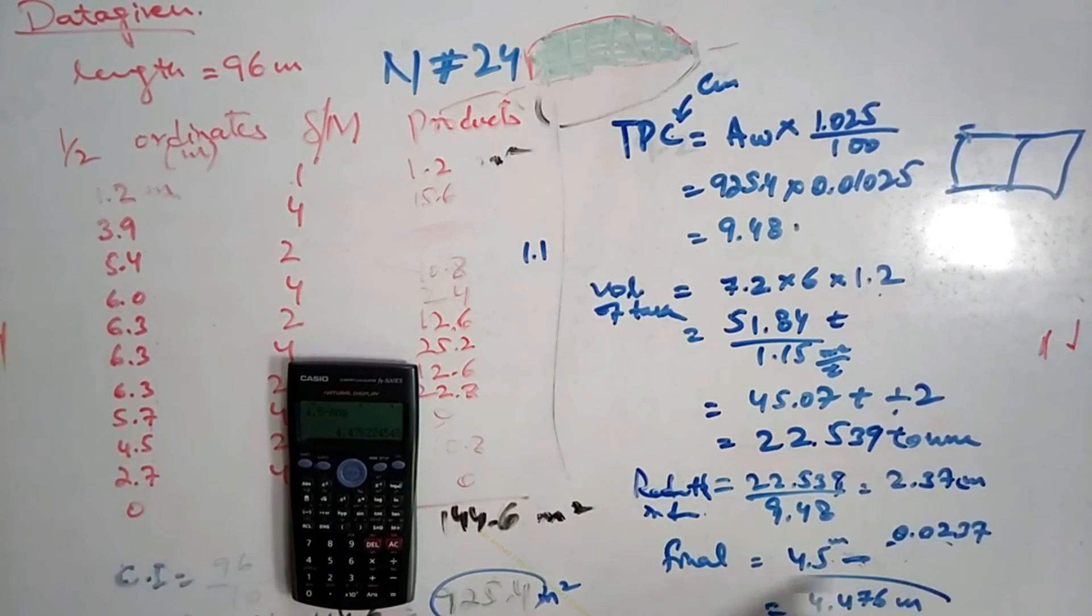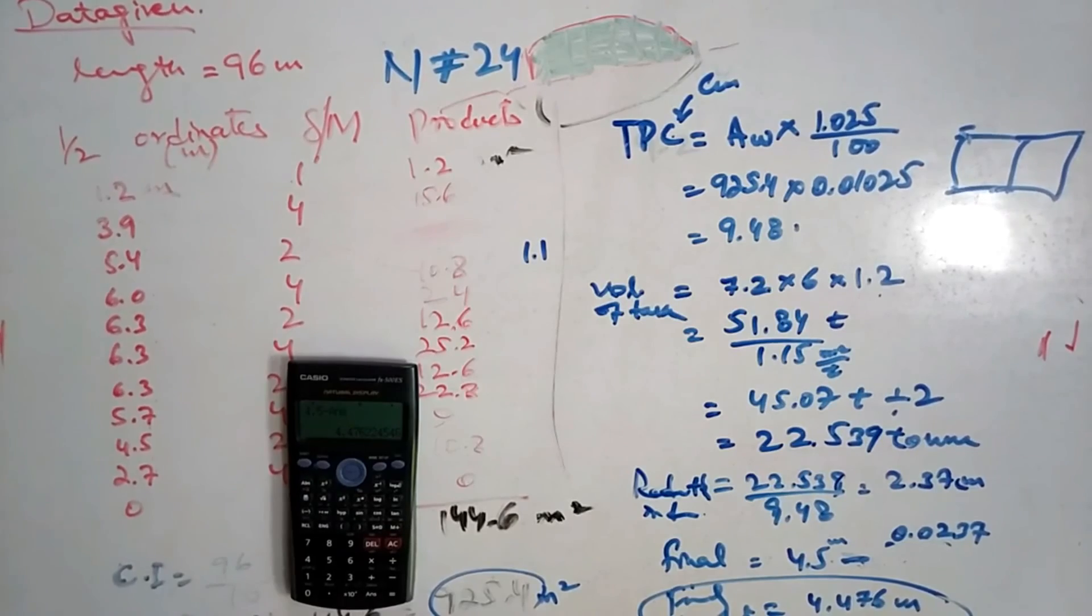That's all for this numerical. The final draft of the ship is 4.476 meters. Thank you for watching. Please subscribe my channel.